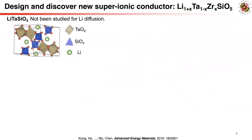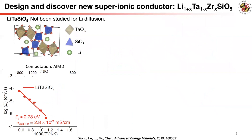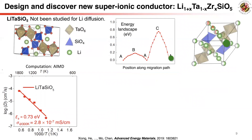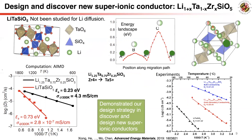We demonstrated this design strategy in a new material system, lithium tantalum silicate, which had not previously been studied for lithium diffusion. This material has low ionic conductivity in its original composition, with a high energy landscape of nearly 0.8 eV despite having good diffusion channels. By inserting more lithium ions through aliovalent doping of zirconium on tantalum, the extra lithium goes to the high-energy sites. Computation shows activation of concerted migration, a decrease of activation energy to 0.23 eV, and an increase of ionic conductivity to 10⁻³ S/cm at room temperature.